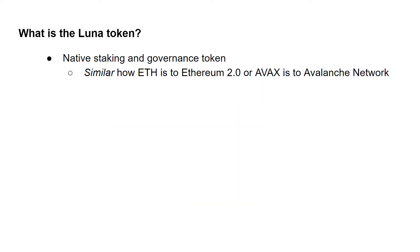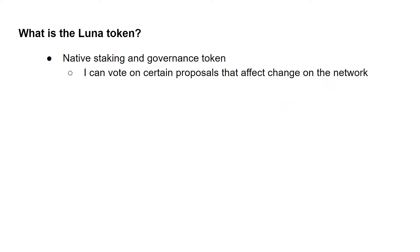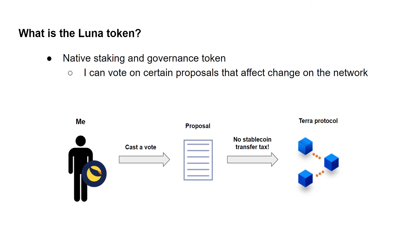LUNA is the native staking and governance token of the Terra network — similar to how ETH is to the Ethereum network, Binance Coin is to Binance Smart Chain, and AVAX is to the Avalanche network. People can stake and lock up their LUNA to receive rewards from the network's transaction fees. For example, locking up 100 LUNA tokens currently earns about 8% APR, which amounts to about 8 LUNA per year. LUNA can also be used to affect governance on the protocol — LUNA holders can vote on proposals like the recent one to remove a tax on stablecoin transactions.